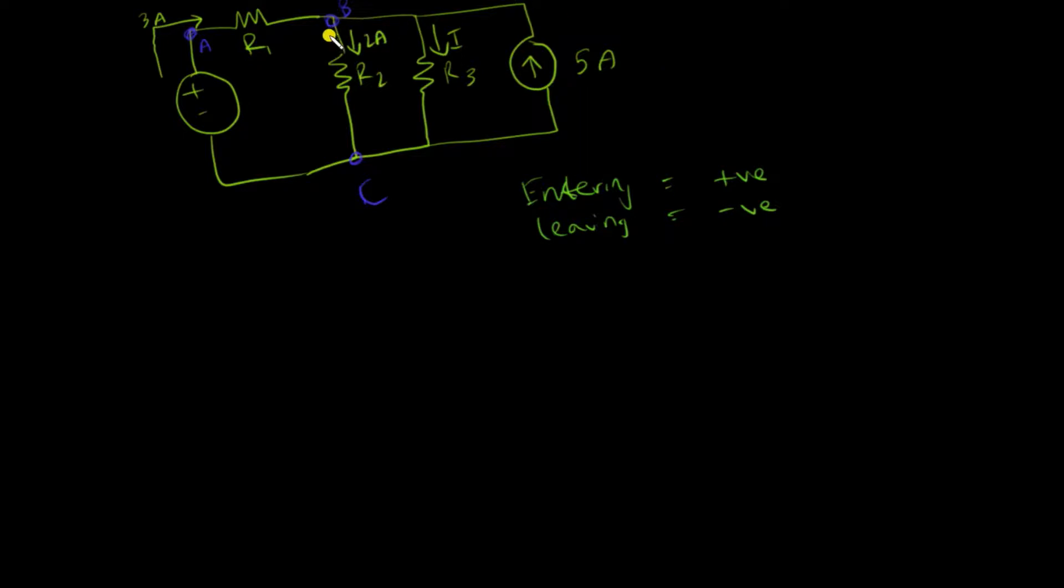Let's look at node B because there's so much current entering and leaving. The first current, three amps, is clearly entering node B so I can write plus three. Two amps is leaving node B so I write minus two.